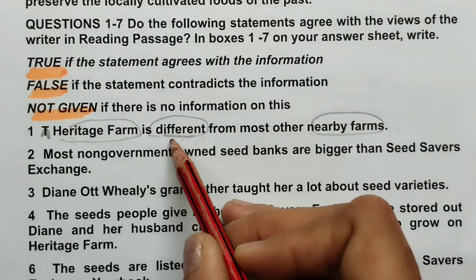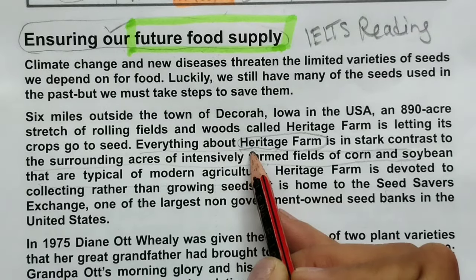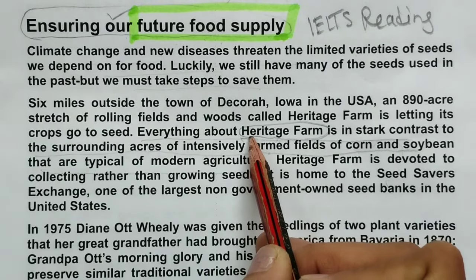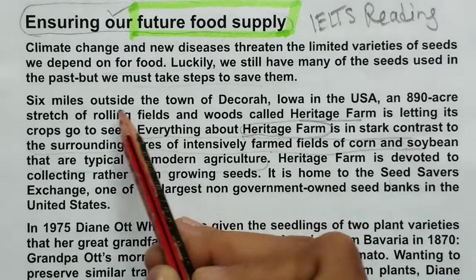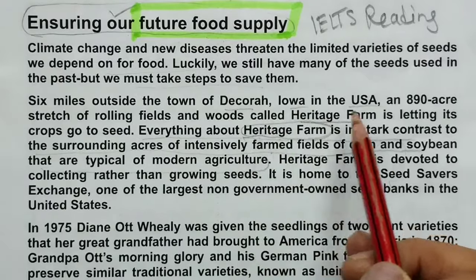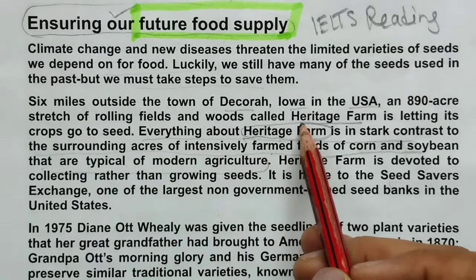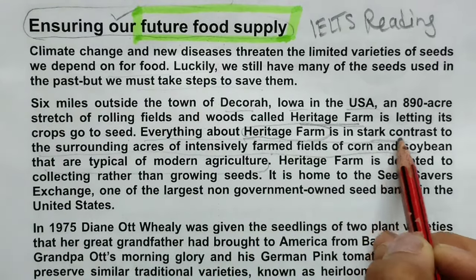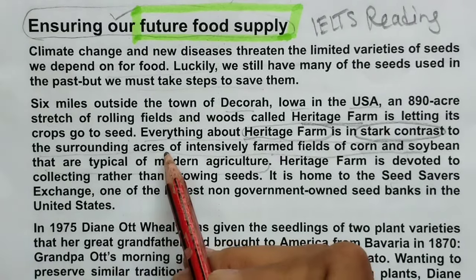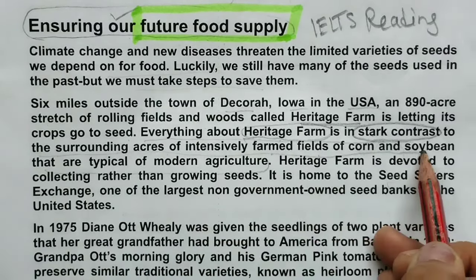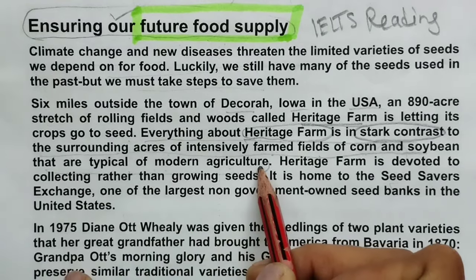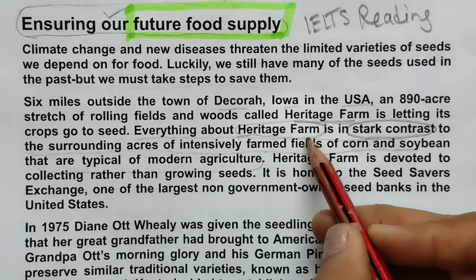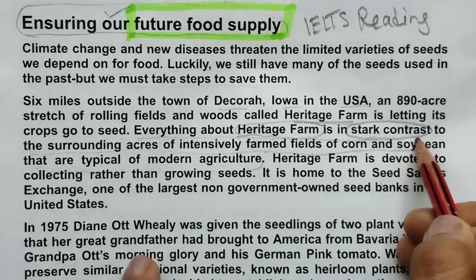Let's find this location in the first paragraph. Heritage Farm — I can see it here and here also. Six miles outside the town of this lower in the USA, an 890-acre stretch of rolling fields and woods called Heritage Farm is letting its crops go to seed. Everything about Heritage Farm is in stark contrast to the surrounding acres of intensively farmed fields of corn and soybean that are typical of modern agriculture.